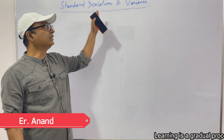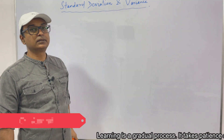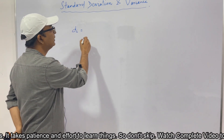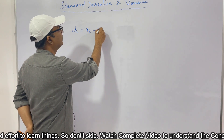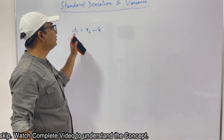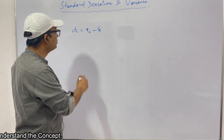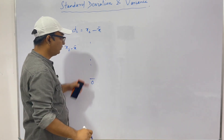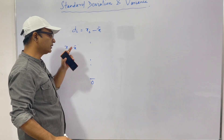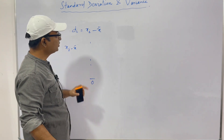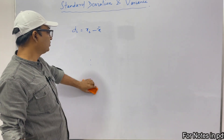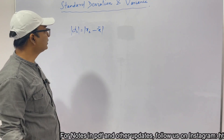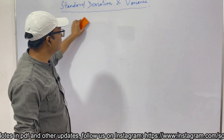Now we will see what is standard deviation and variance. We have seen mean deviation — if we take di as xi minus x-bar, that is the deviation about the arithmetic mean, it comes to zero, because if we add those individual deviation values they sum to zero. So in mean deviation we took the absolute value of di for our computations.